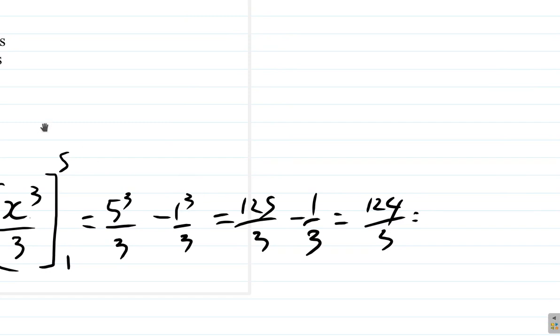So that gives us 3 into 124. 3 into 3 is 1, 3 into 12 is 4, 3 into 4 goes one time and 1 third. So it's 41 and 1 third we get.